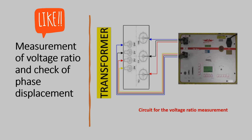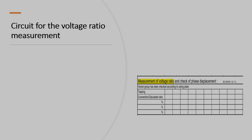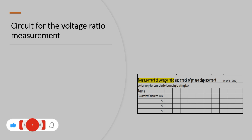This is the circuit of the voltage ratio measurement. This is an example of measuring voltage ratio from vector group, tapping, and connection calculated based on the percentage.